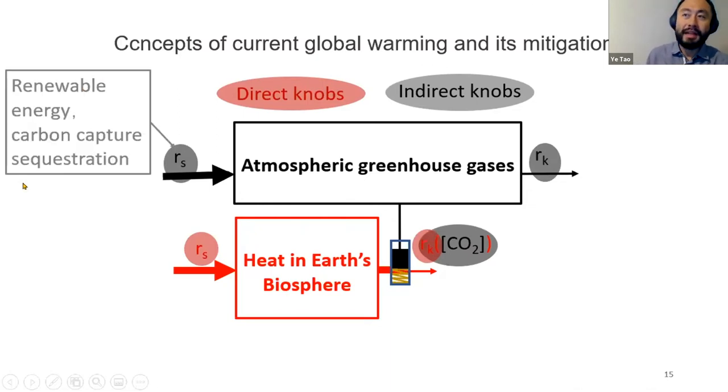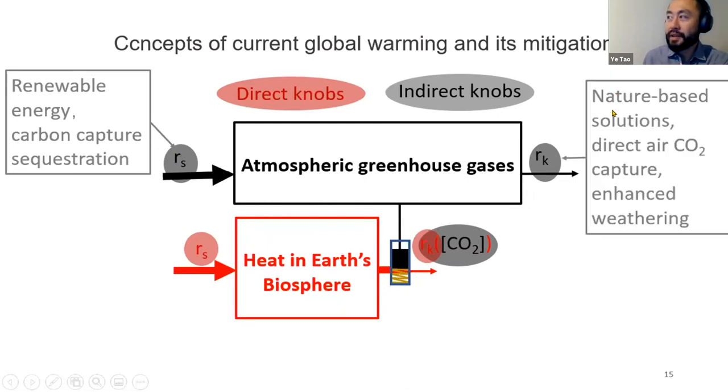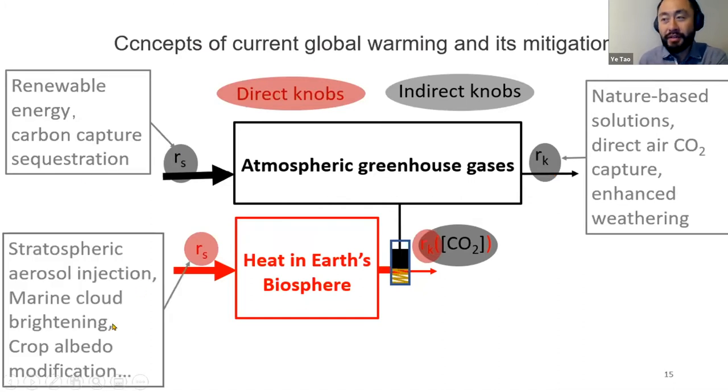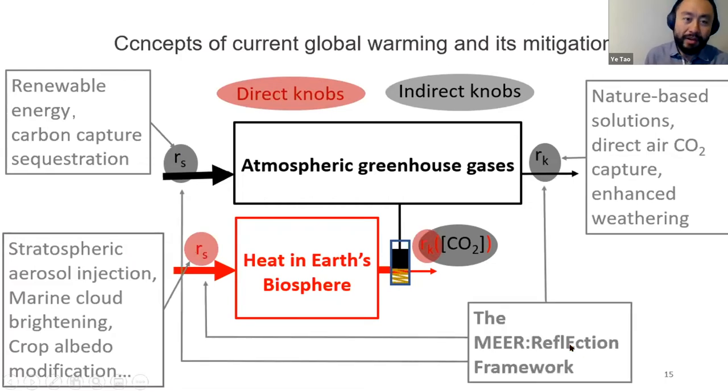Renewable energy, carbon capture sequestration—all are acting on the source rate for greenhouse gases, trying to make this smaller. Carbon capture methods from the air are trying to increase the sink rate. Geoengineering protocols in general are trying to reduce the source rate of heat. The mirror reflection framework that we developed is trying to target multiple of these in a coherent engineering framework. But we certainly favor targeting Rs because that's where we can have the most leverage on the system.